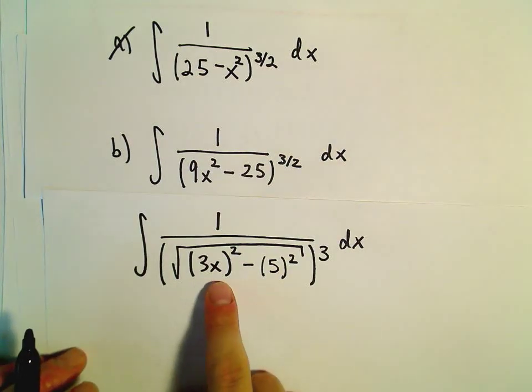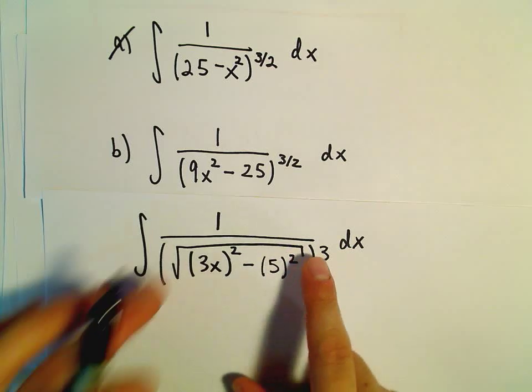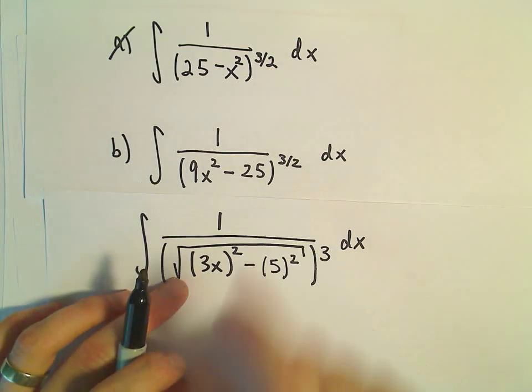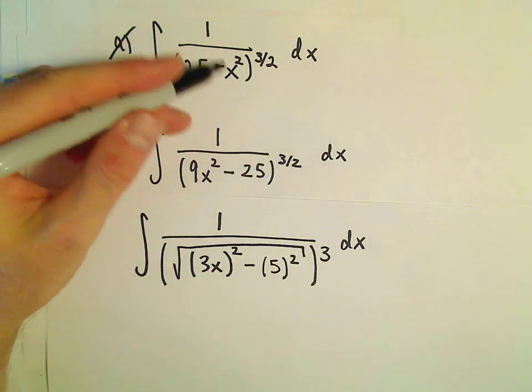So again, the square root is to the 1 half power. Well, we would have it to the 1 half cubed, which would give us to our 3 halves power, just like our first example.